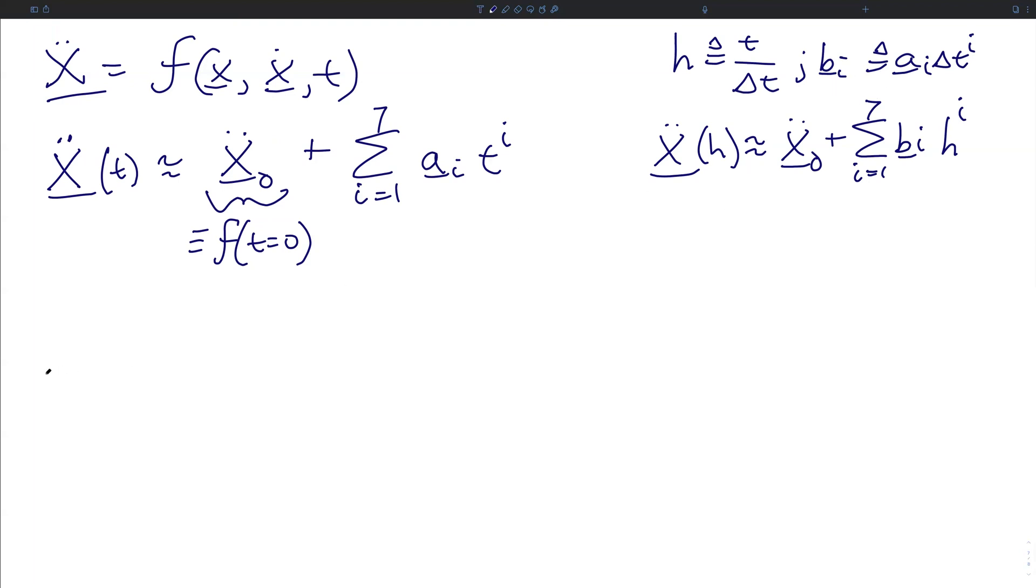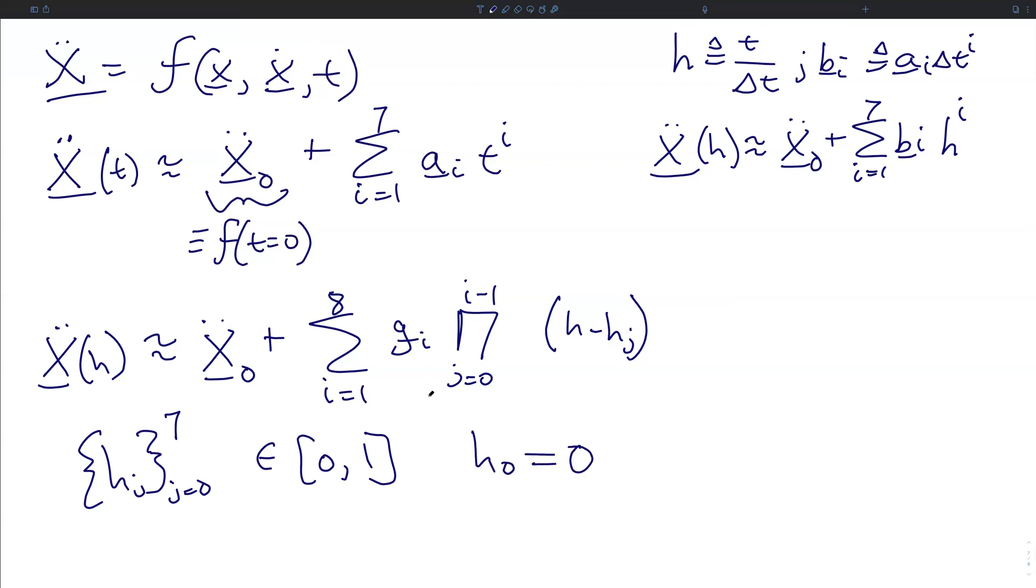We rewrite this expression and get x double dot of h is approximated by x double dot not plus the summation from i equals 1 to 8 of a set of vectors g sub i times the product from j equals 0 to i minus 1 of the difference between h and the sub steps h sub j. These sub steps, the set h sub j from j equals 0 to 7, are coefficients that are in the range 0 and 1, and h naught is defined as strictly 0. Also, these g sub i's depend only on the evaluations of our dynamics f at the sub steps h sub n for n less than or equal to i.